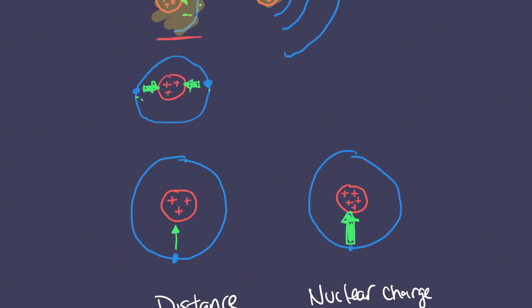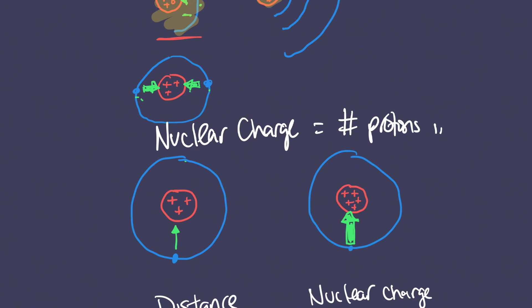The second variable is nuclear charge — really just the number of protons in the nucleus. The more protons you have, the larger the nuclear charge. The relationship between nuclear charge and Coulombic attraction is a direct relationship: as you increase the number of protons in the nucleus, the greater the attraction between the electrons and the protons. This makes sense because the more protons you have, the stronger they can pull on the electrons.